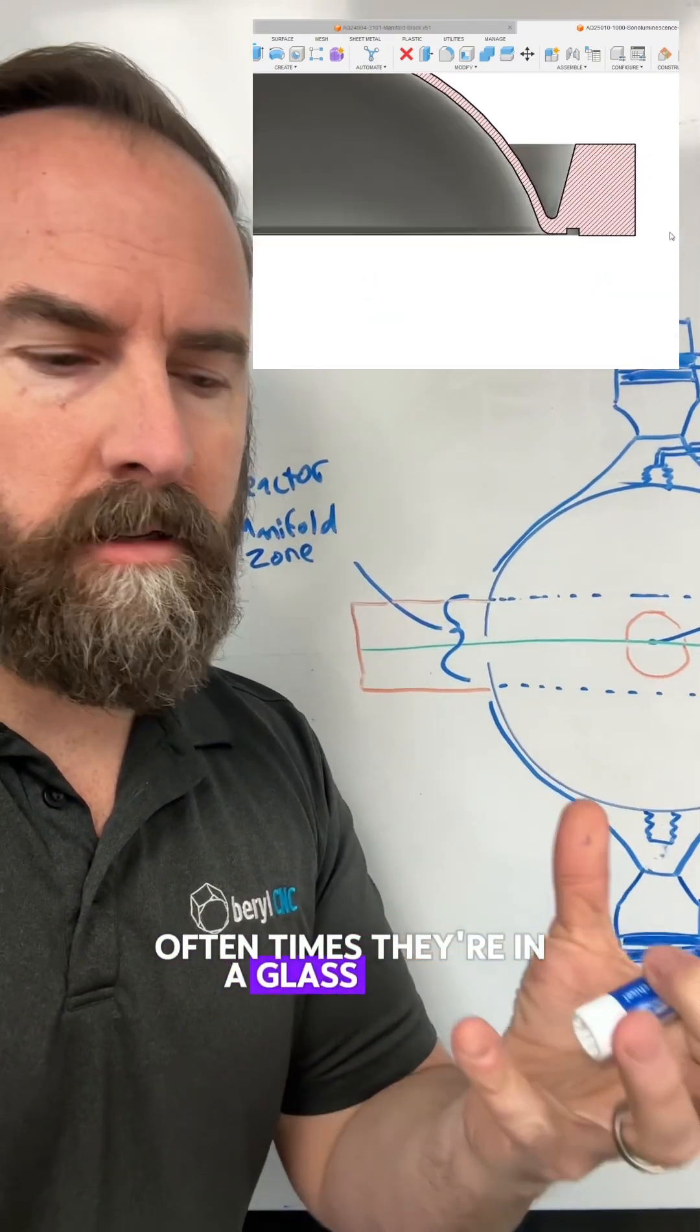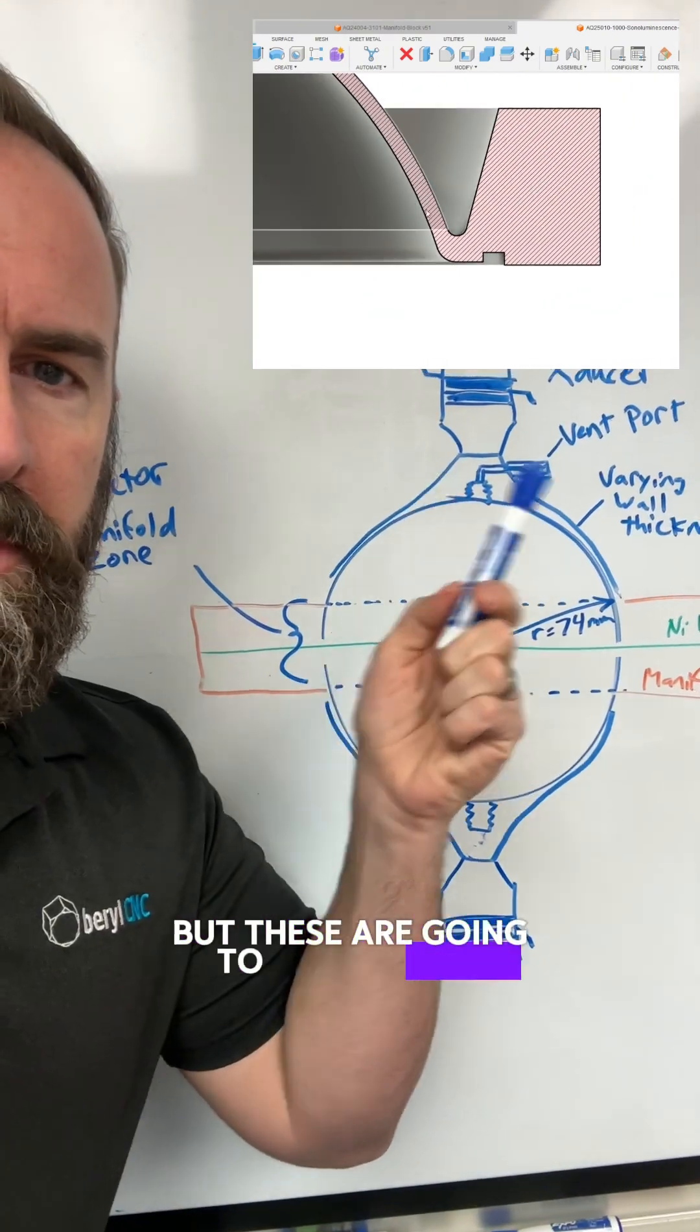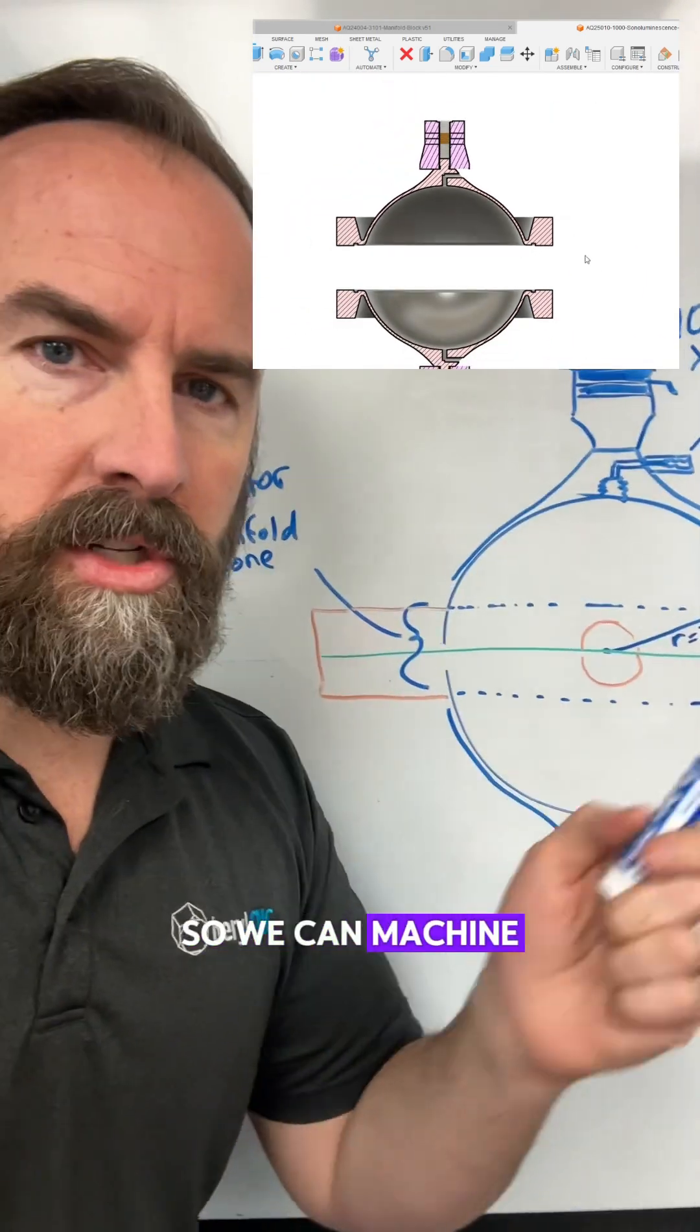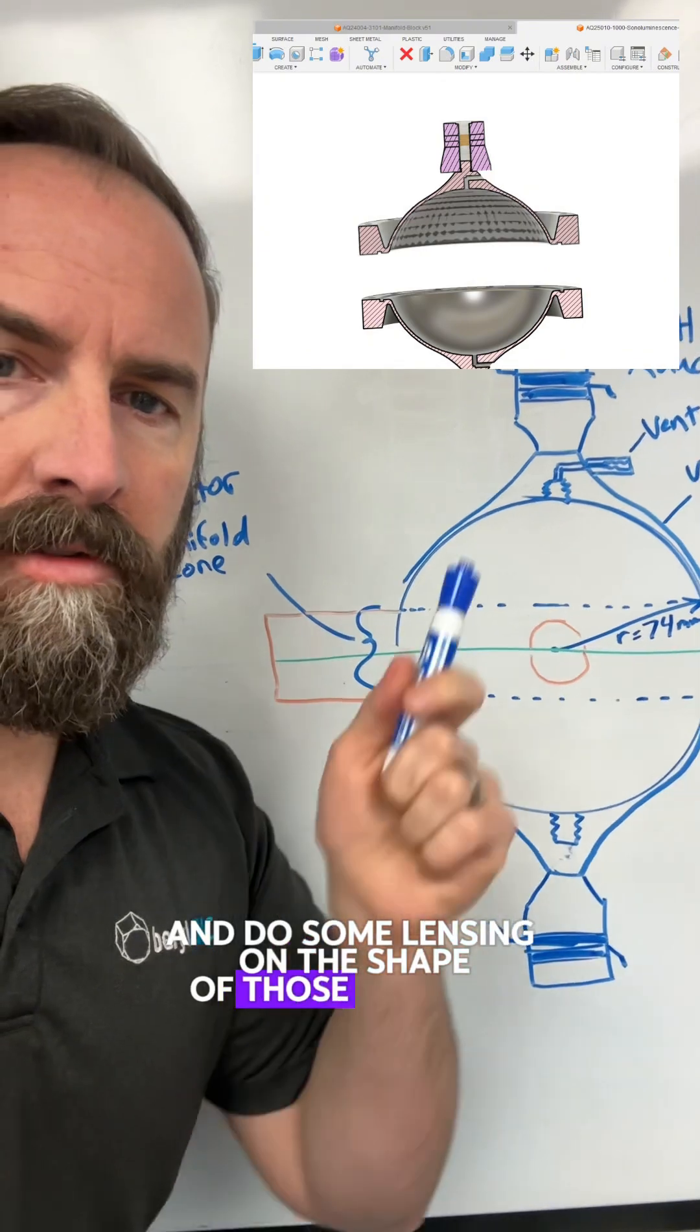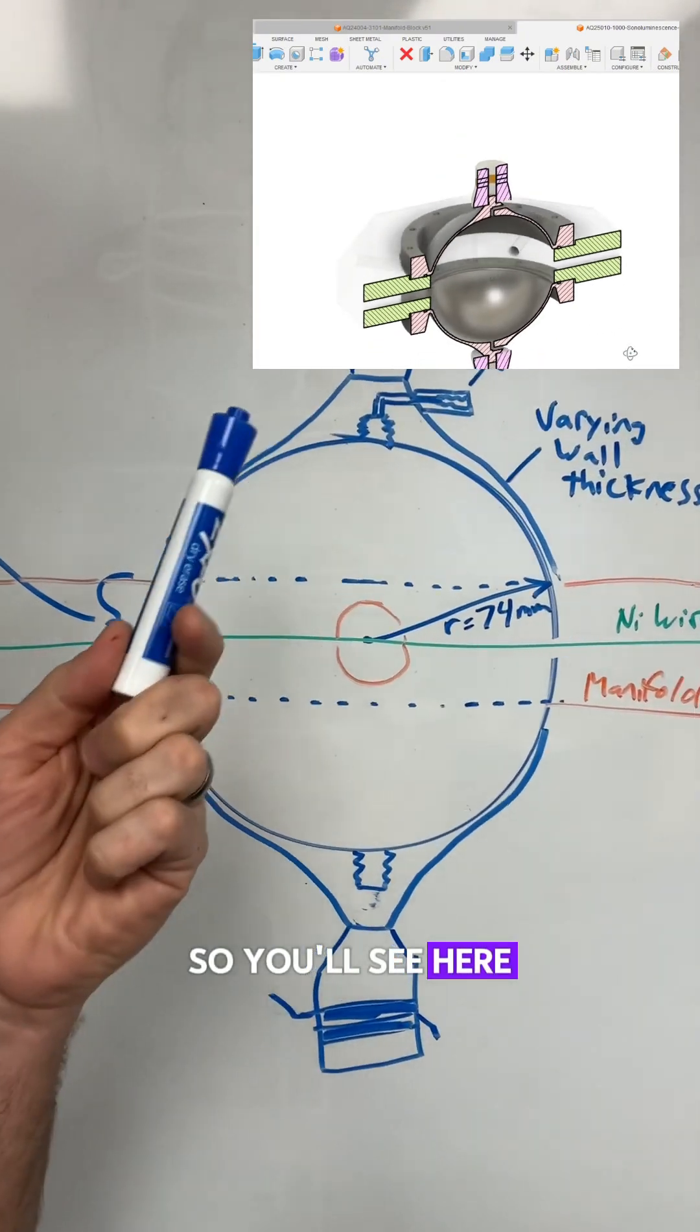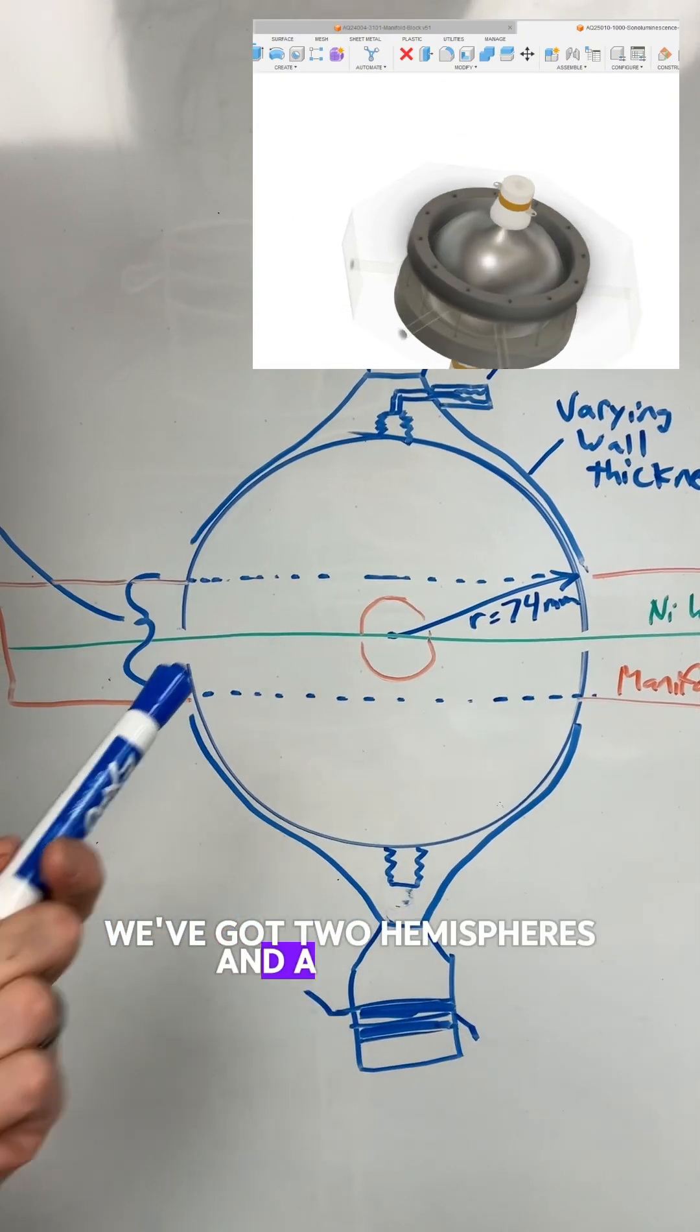Oftentimes they're in a glass sphere, but these are going to be aluminum top and bottom so we can machine them and control their shape and do some lensing on the shape of those surfaces. You'll see here we've got two hemispheres and a manifold in the center.